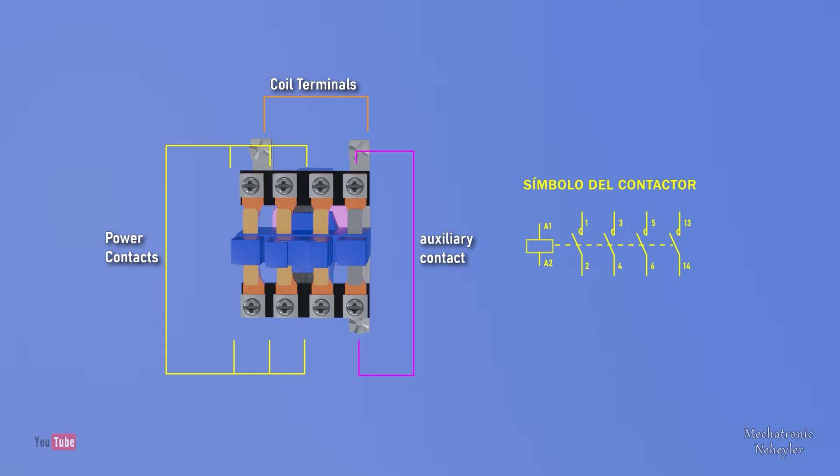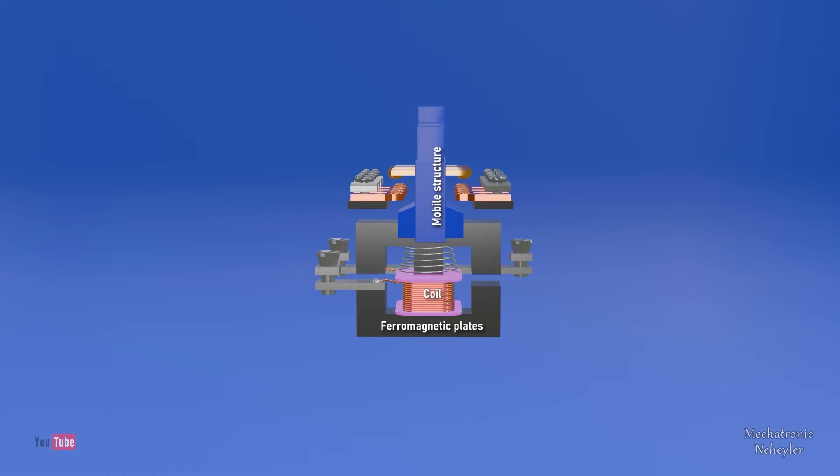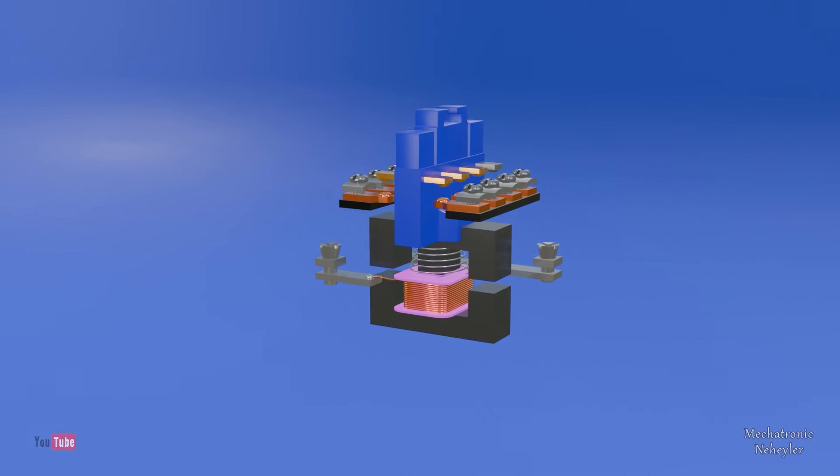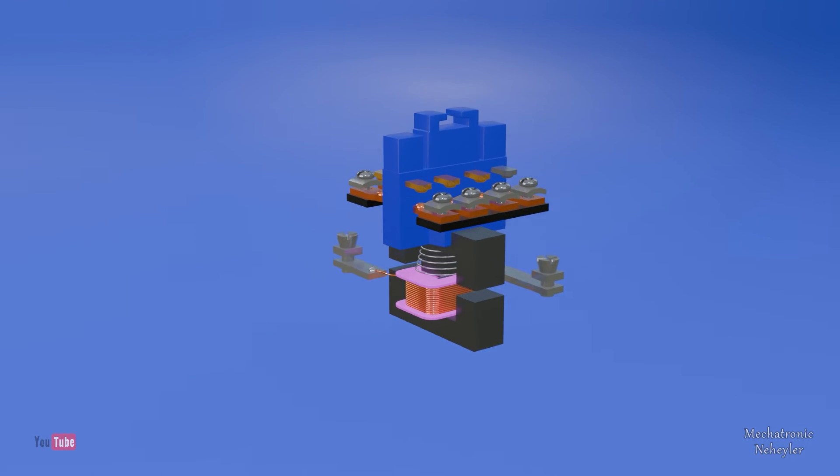Internally, the terminals are attached to metal plates. If we look from the side view, we can see the coil in which, in the center, it has a ferromagnetic material that, when the coil is energized, becomes an electromagnet and attracts the moving part of the contactor.